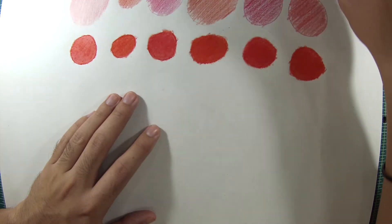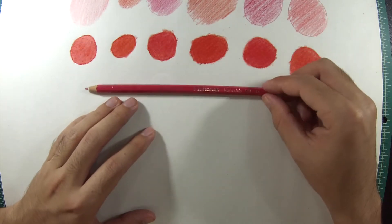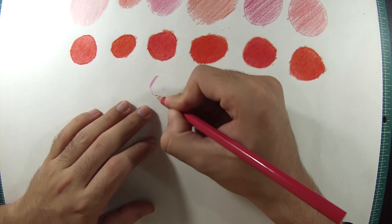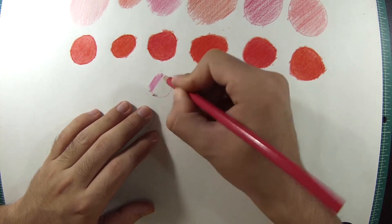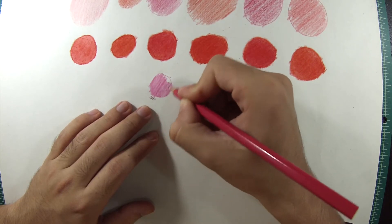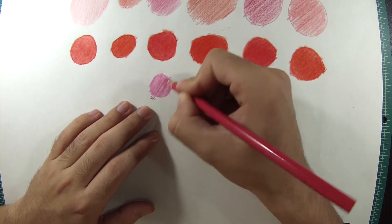And then take the same pencil, the same Staedtler pencil, and then I'm just coloring it in. As you can see, it's the same pencil but with a different color. And again, it's blending very nice.